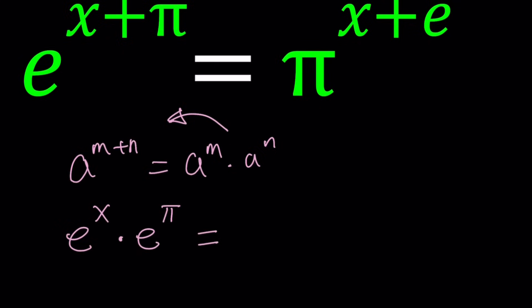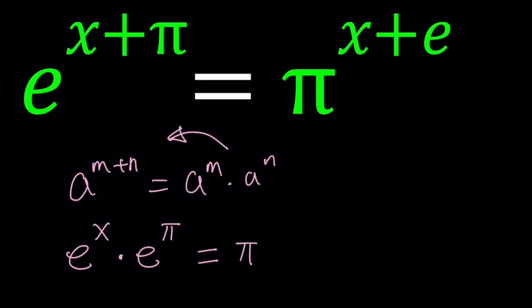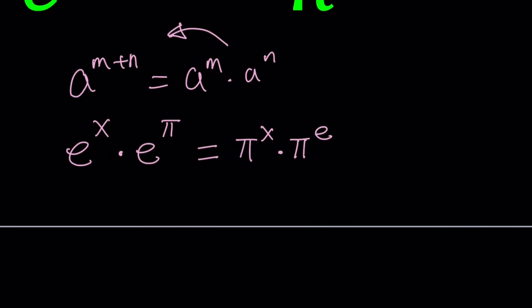We're going to do the same thing on the right-hand side, so it's pi to the x times pi to the e. Now I want you to notice two things. First, e to the x and pi to the x are variables because x is a variable. And e to the pi and pi to the e are constants. But we were able to separate them.